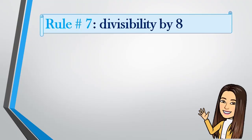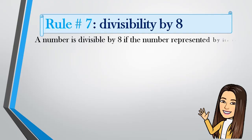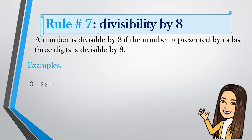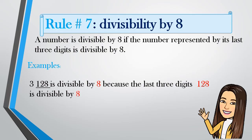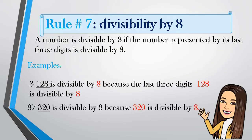Rule number 7: Divisibility by 8. A number is divisible by 8 if the number represented by its last 3 digits is divisible by 8. Example: 3128 is divisible by 8 because the last 3 digits, 128, is divisible by 8. Another example: 87320 is divisible by 8 because 320 is divisible by 8.